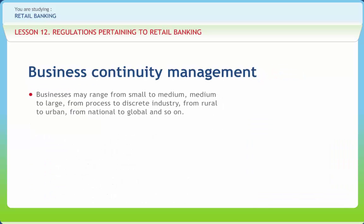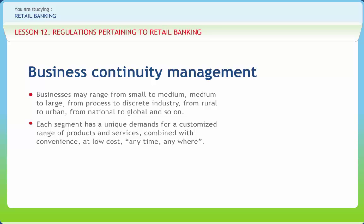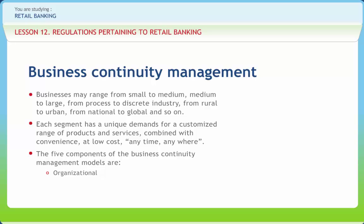Businesses may range from small to medium, medium to large, from process to discrete industry, from rural to urban, and from national to global. Each segment has unique demands for a customized range of products and services, combined with convenience at low cost, anytime, anywhere. The five components of the business continuity management model are: organizational — the bank must be clear in its vision and direction, with strategic objectives for markets, geographies, volumes, diversity of portfolio, and multiplicity of channels.